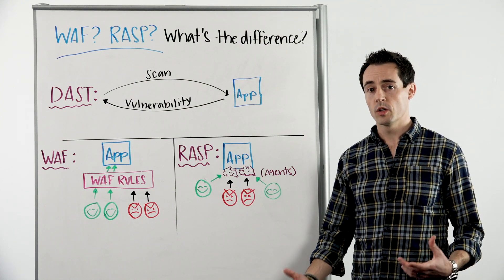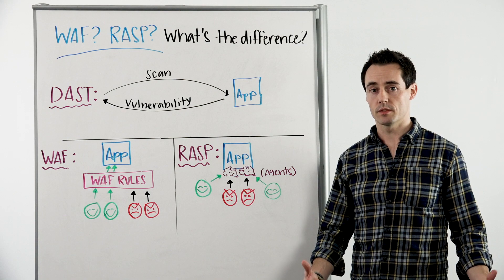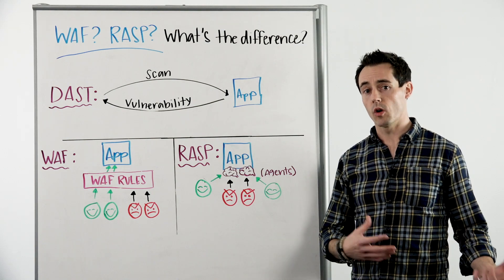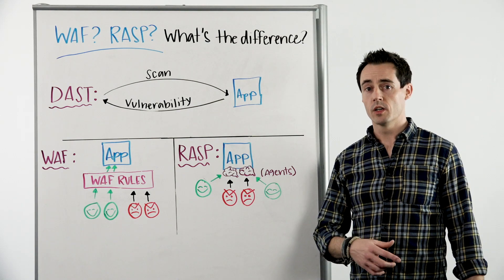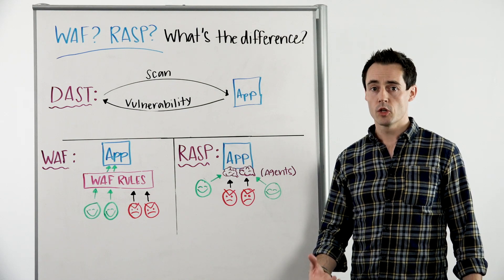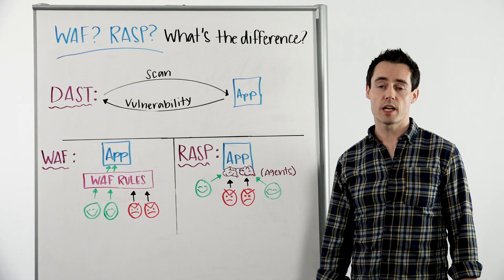Rather than build a model, we use the actual application. Instead of predicting that a request calls a database, opens a file, or starts a shell to execute a command, you watch the app at runtime to see if it actually performs those actions.